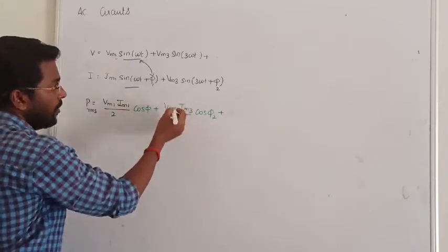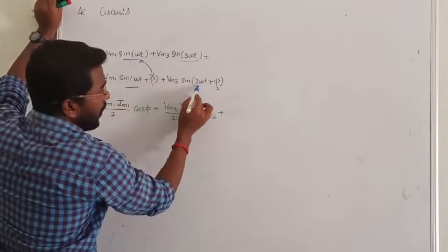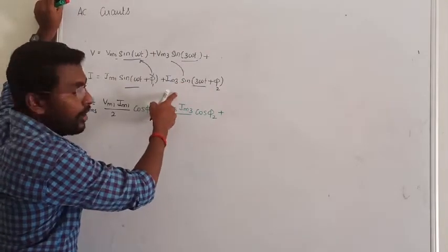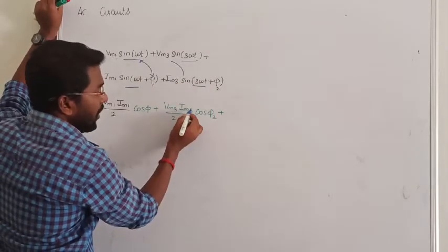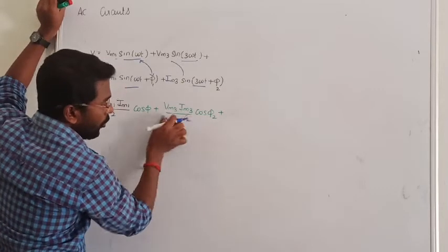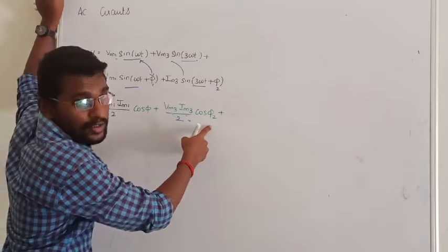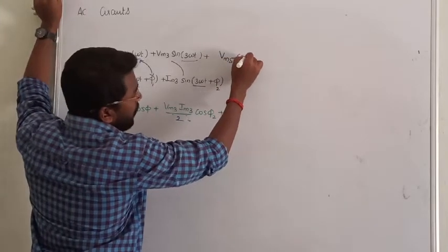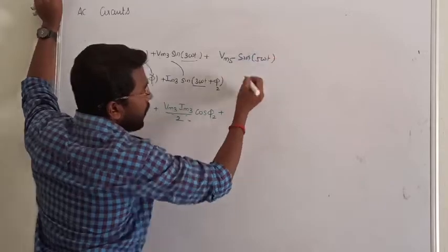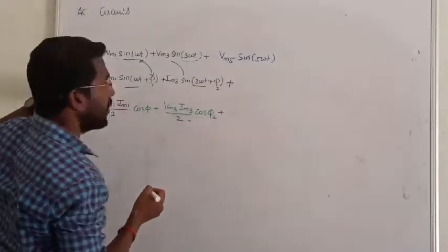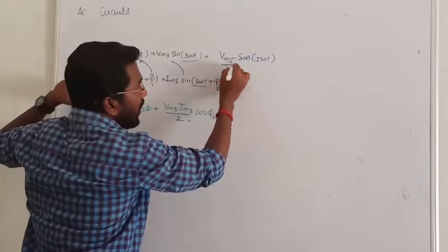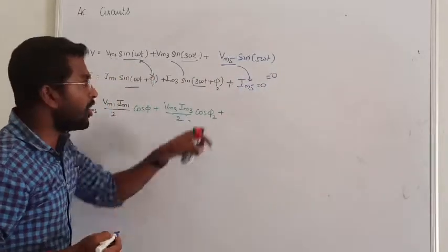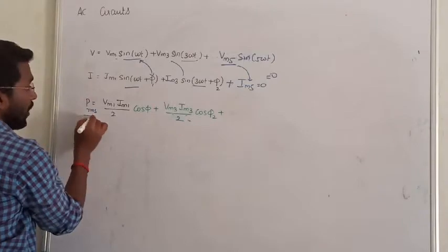Suppose in an example, if you have V_M3 and I_M3 both present, you can multiply them: (V_M3/√2)(I_M3/√2) × cos(φ3) = V_M3 × I_M3 / 2 × cos(φ3). But if V_M5 × sin(5ωt) exists in voltage but the corresponding I_M5 term is missing in current, then that product is zero. You do not need to consider that voltage term while calculating the power. That is how we calculate the total RMS power when there is a phase difference between voltage and current.